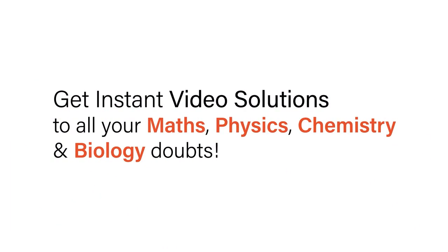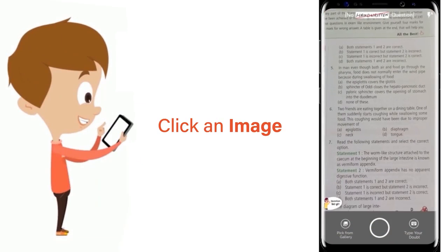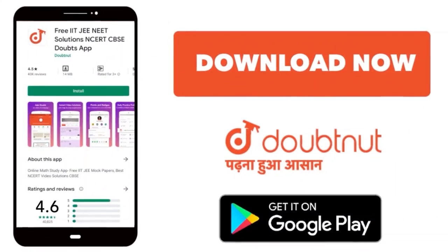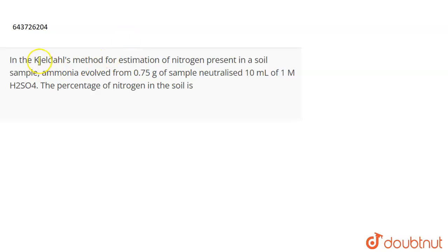With Doubtnet, get instant video solutions to all your math, physics, chemistry, and biology doubts. Just click the image of the question, crop the question, and get instant video solution. Download Doubtnet app today. The question is: In Kjeldahl's method for estimation of nitrogen present in a soil sample...